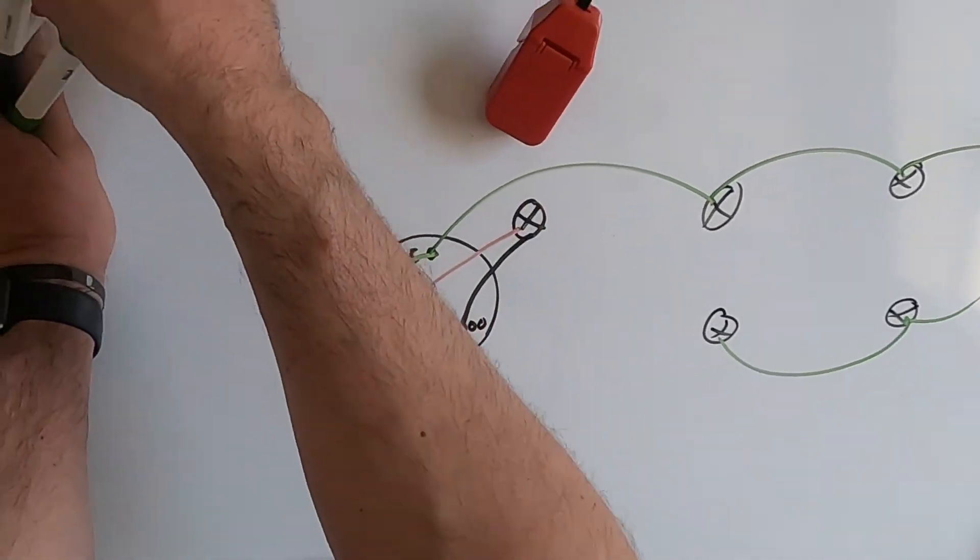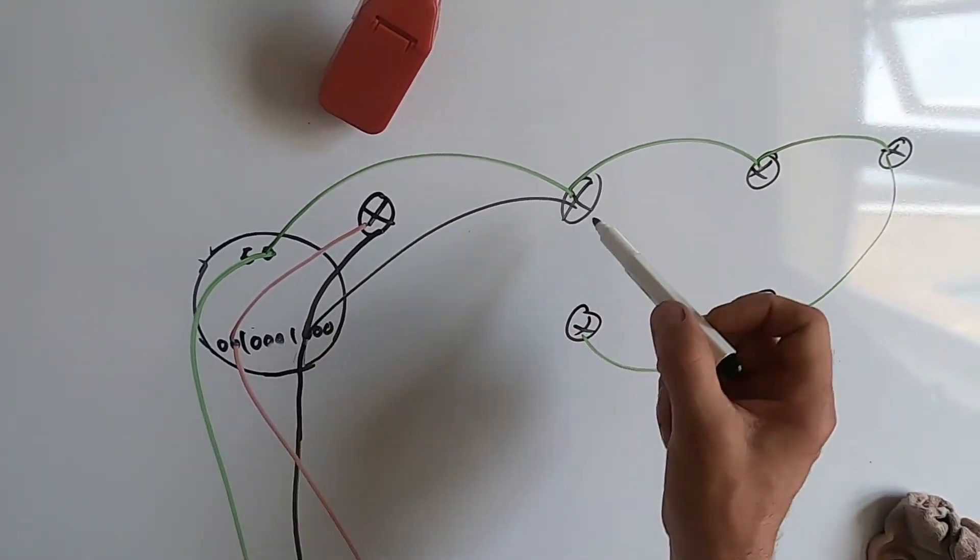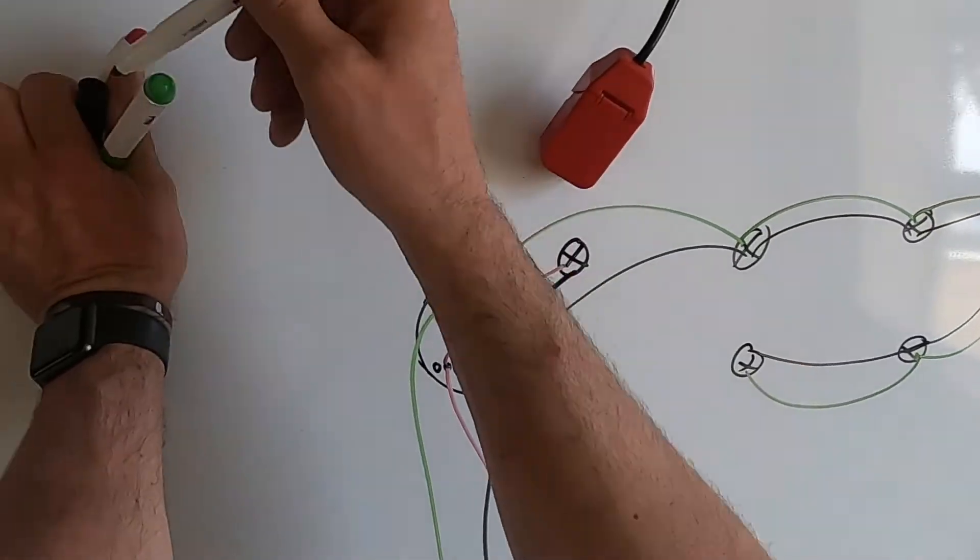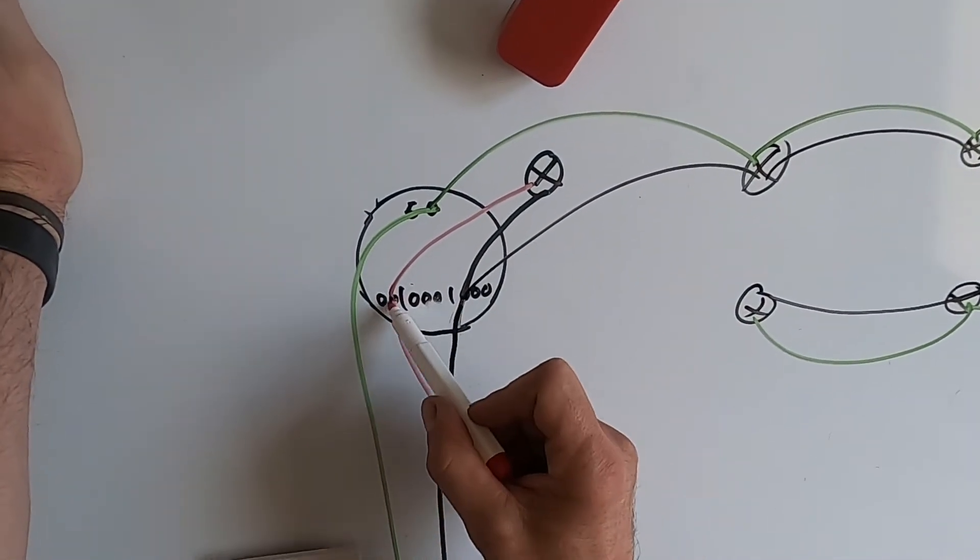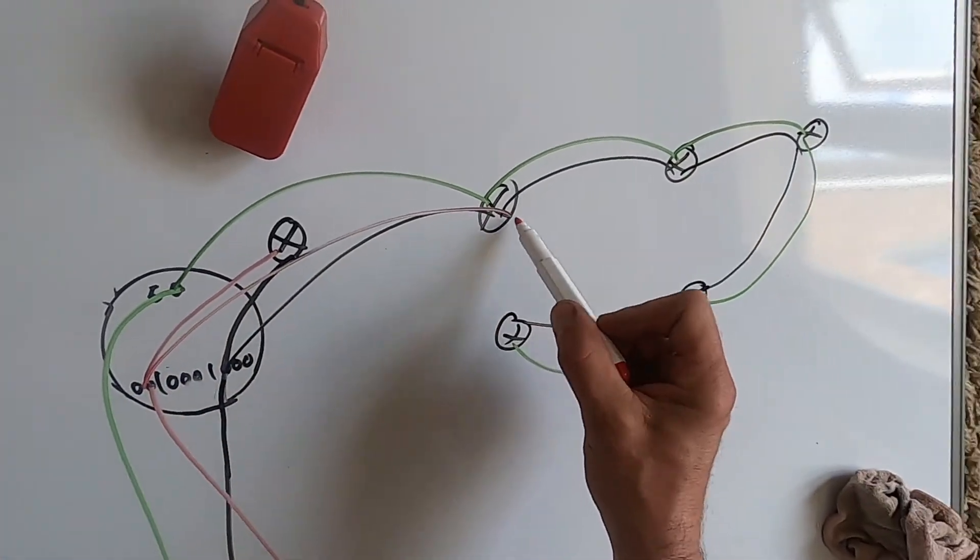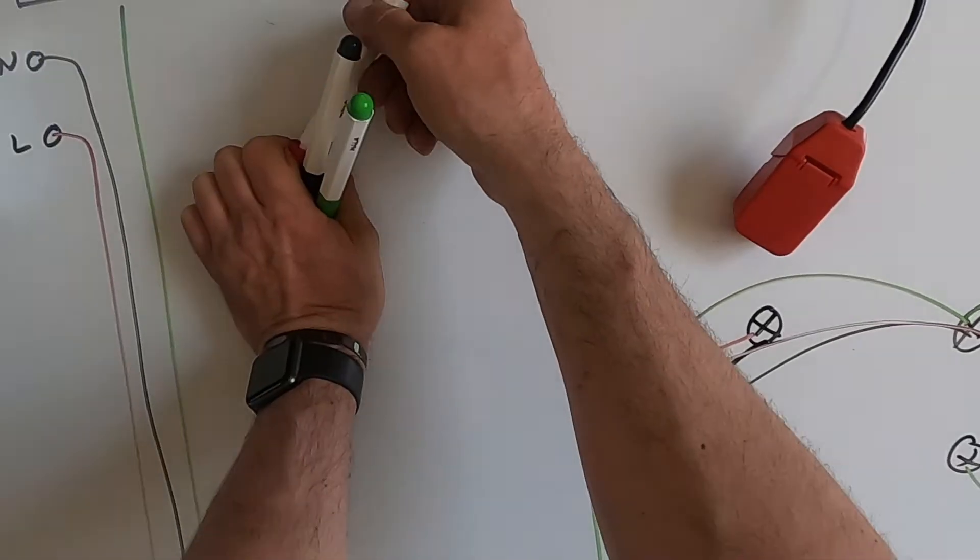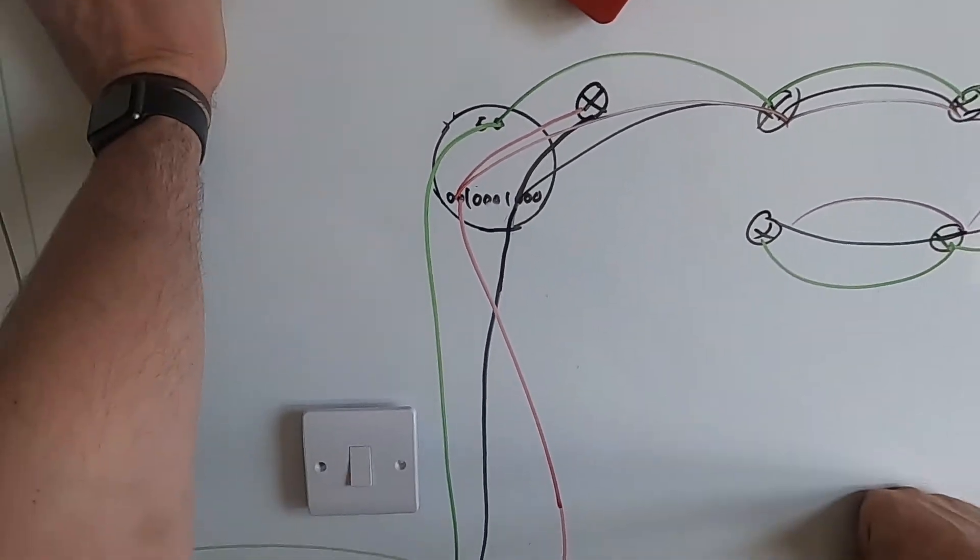That'll be your earth, your neutral, and your live. And there'll be no need for a junction box.